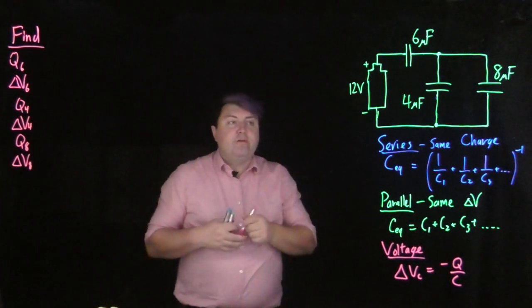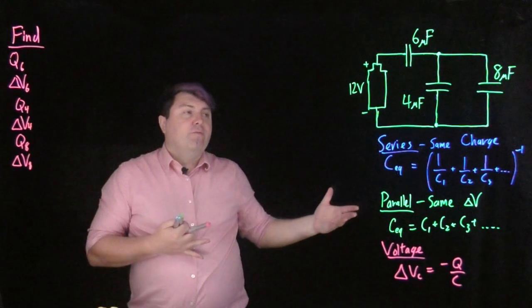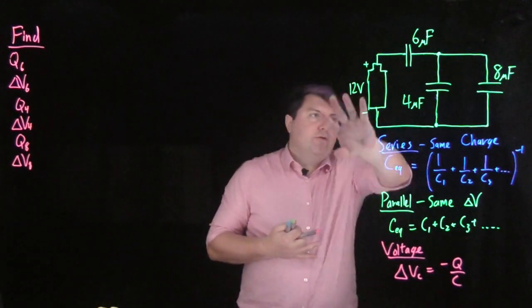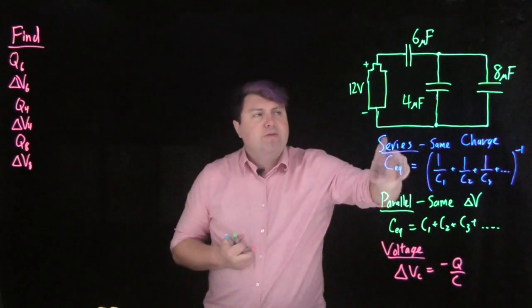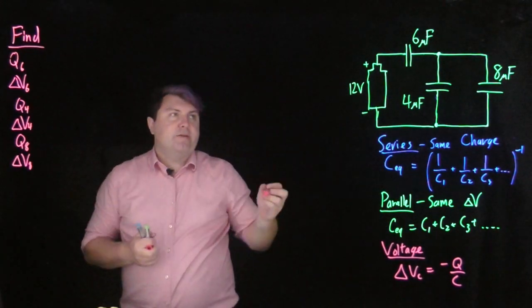One thing we could do is use Kirchhoff's loop rules and junction rules to solve for all of this, but if we have one battery and only one battery, then it's oftentimes nicer to use the equivalent capacitor rules.